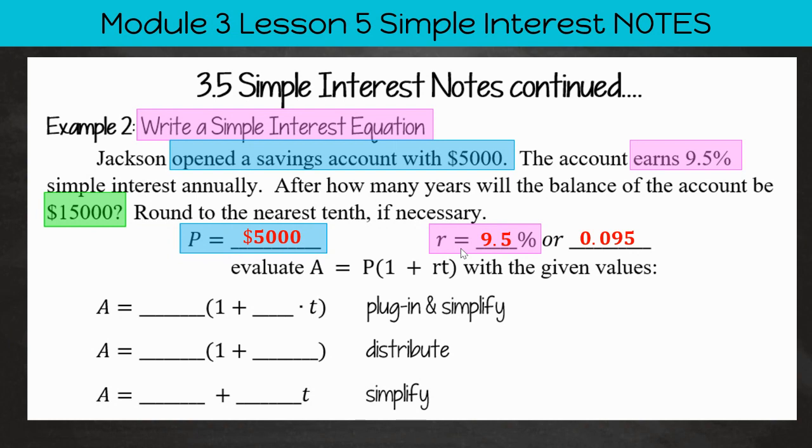The rate is 9.5%, or 0.095 as a decimal. Because remember, we take 9.5 and divide it by 100 to get our decimal. Now we're going to evaluate that and replace those numbers with the variables and simplify the equation.